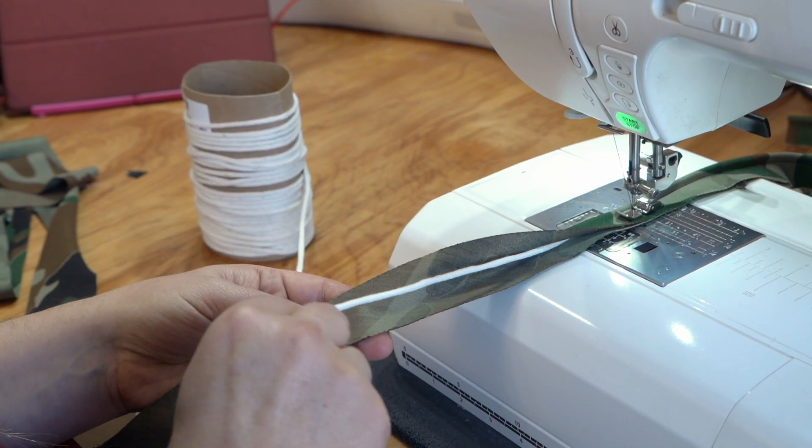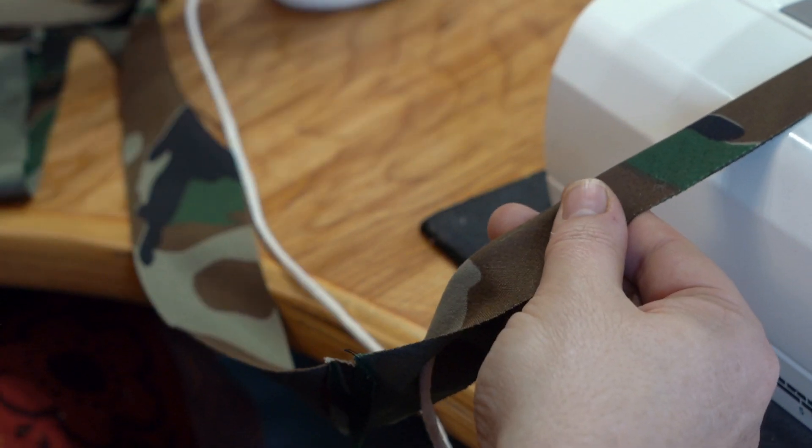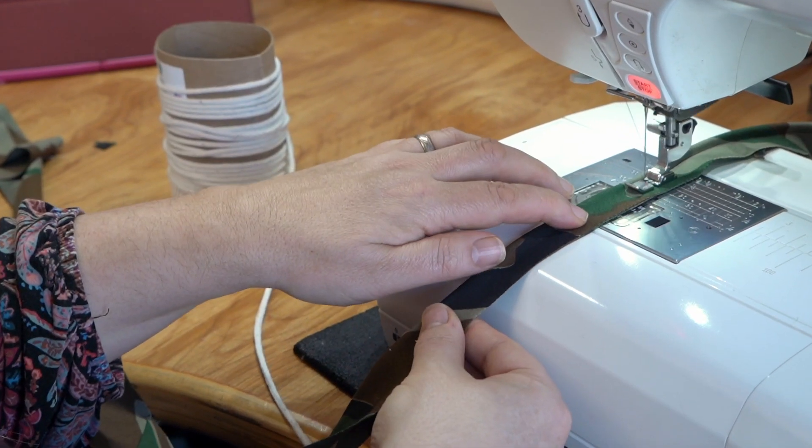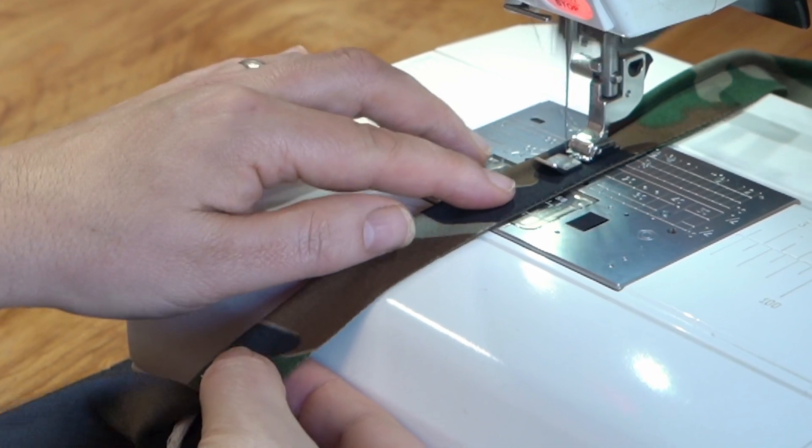Stitch first cord using one-sided machine foot. Stitch second cord right next to the first, also using one-sided foot. Gently press second cord so it sits right above the first. Easy or not.